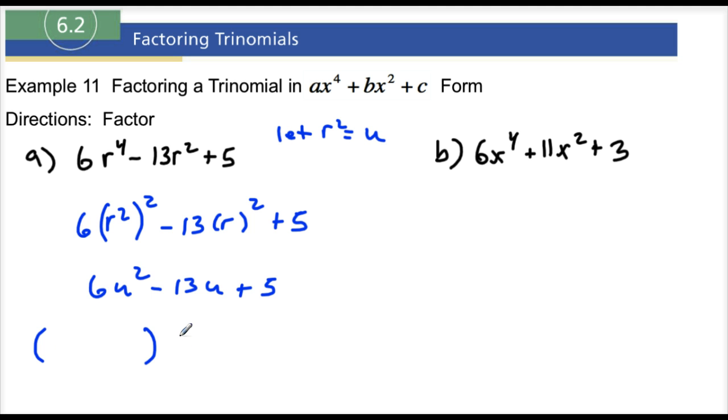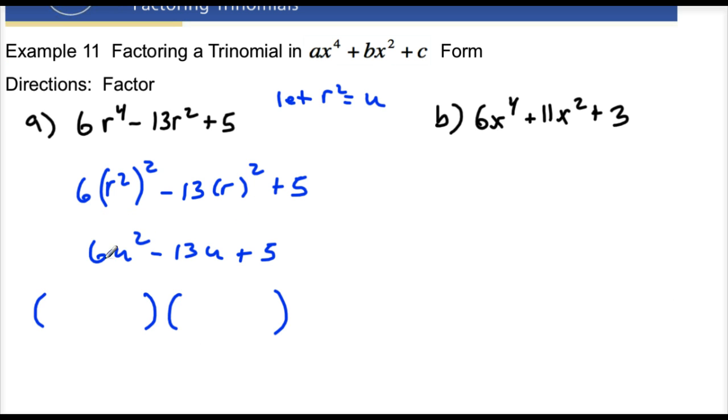So let's go ahead and just straight go into the answer. I'm going to do my guess and check method. If I want to get 6u squared, I'm going to use 3u and 2u, and I'm going to use 5. So I'm going to use 1 and 5. So let's just check this. 1 times 2u is 2u. 3u times 5 is 15u. Can I get negative 13 out of 2u and 15u? Well, yeah, right? I want the 2u to be positive, and I want the 15u to be negative.